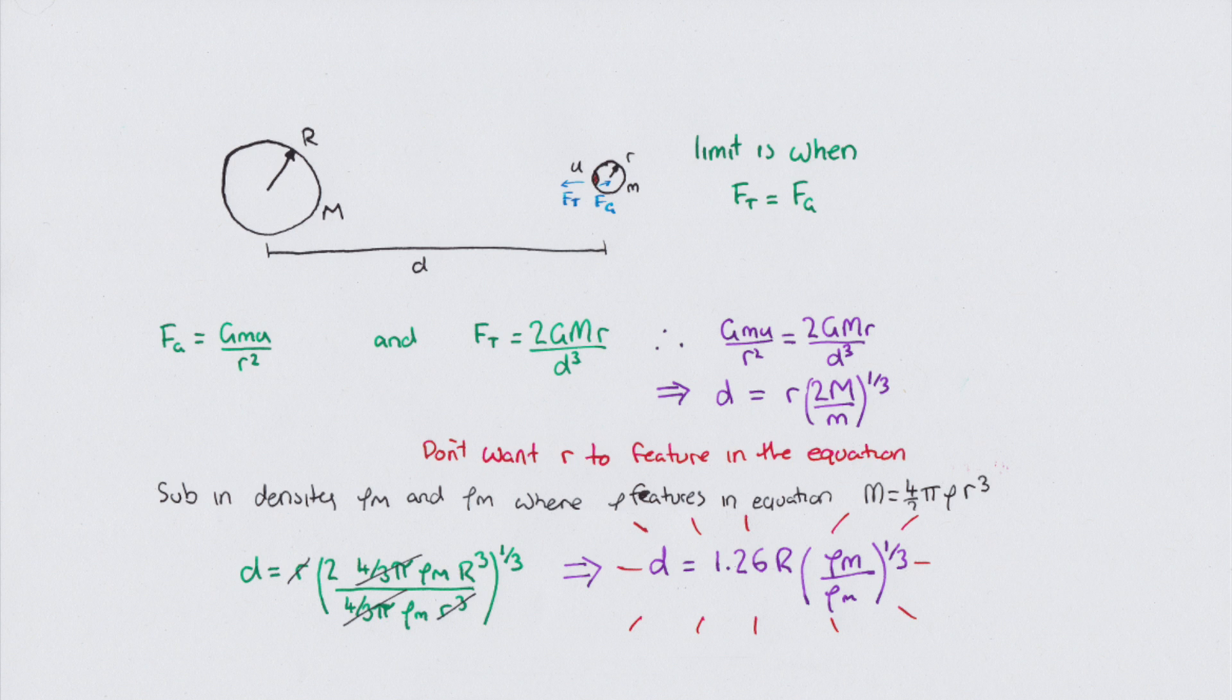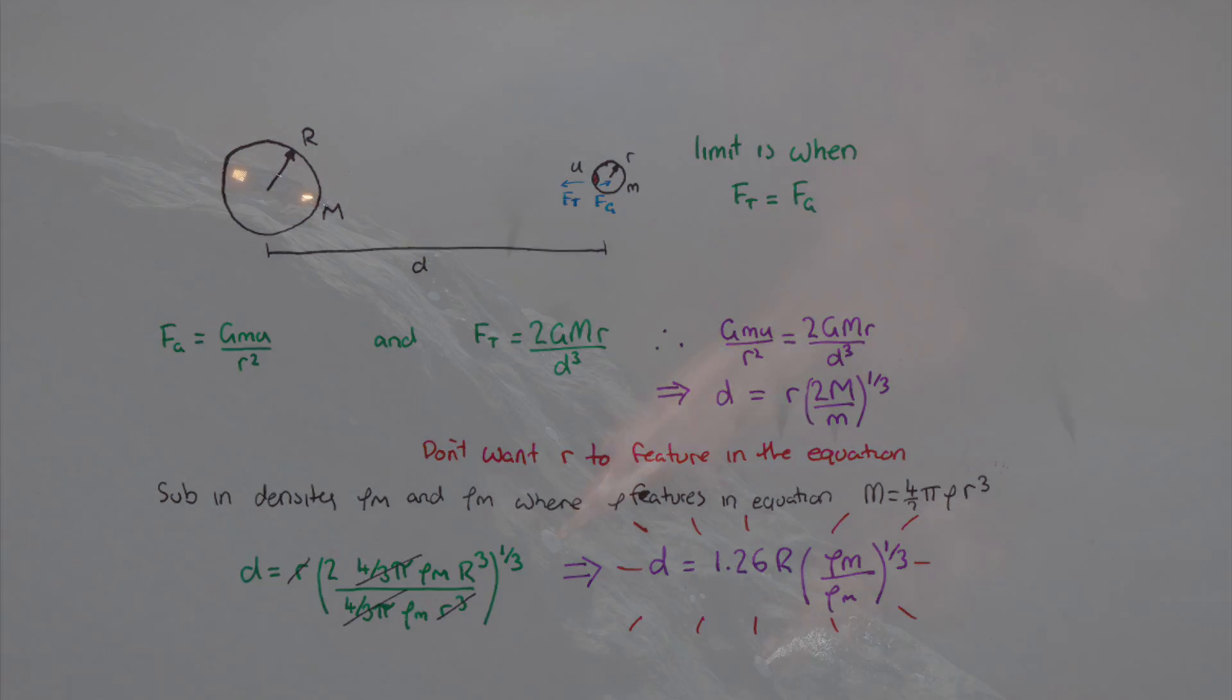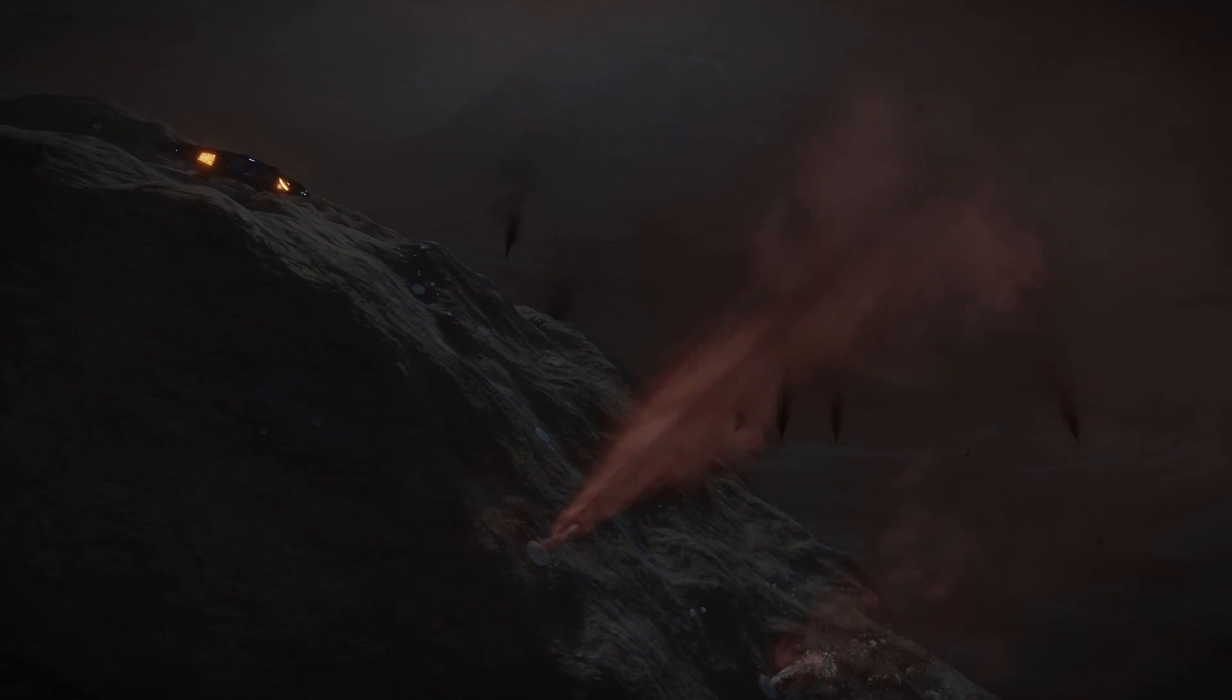This formula is widely misquoted, as the Roche limit is 1.25 times the radius. The assumption being that the density ratio of the planets is equal to 1. And this, obviously, is not the full picture.